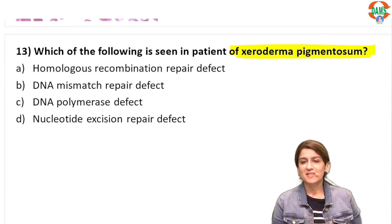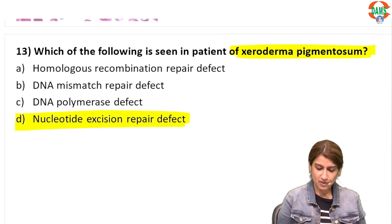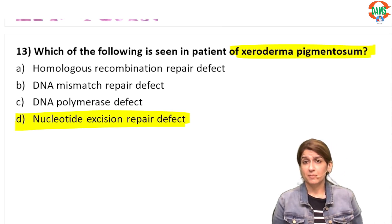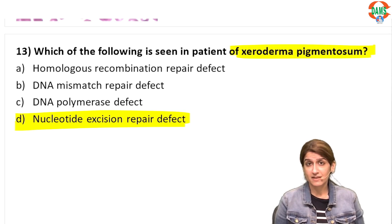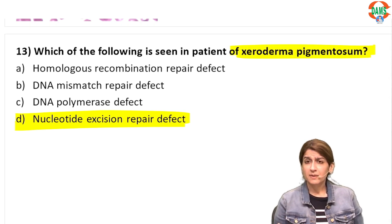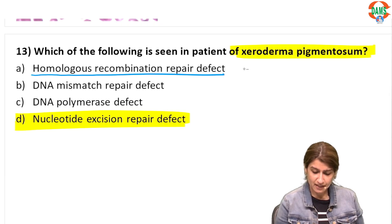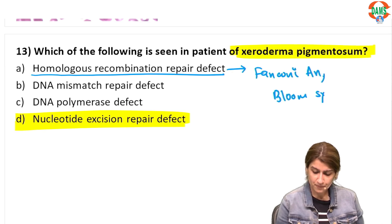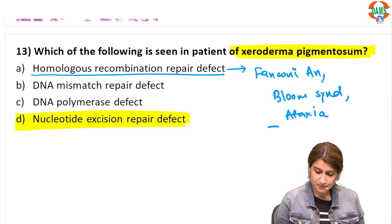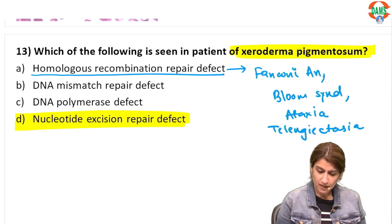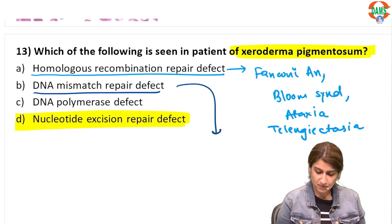Which of the following is seen in xeroderma pigmentosum? Xeroderma pigmentosum is a nucleotide excision repair defect; the correct answer is option D. These patients have a risk of developing skin cancers. Other DNA repair defects: homologous recombination repair defect leads to Fanconi anemia, Bloom syndrome, and ataxia-telangiectasia. Mismatch repair defect leads to HNPCC, also called Lynch syndrome.